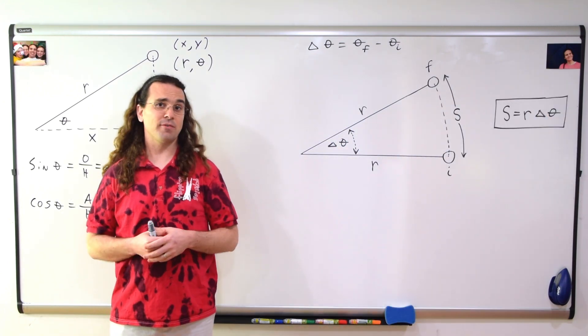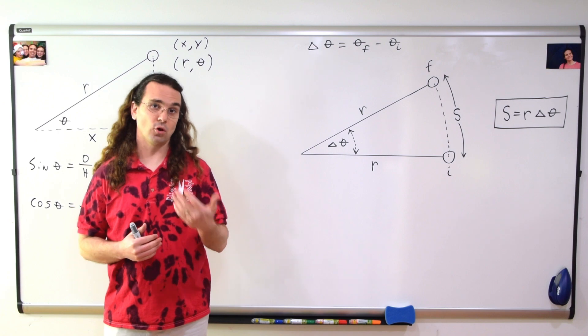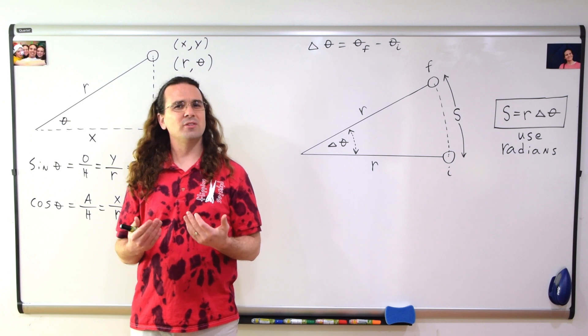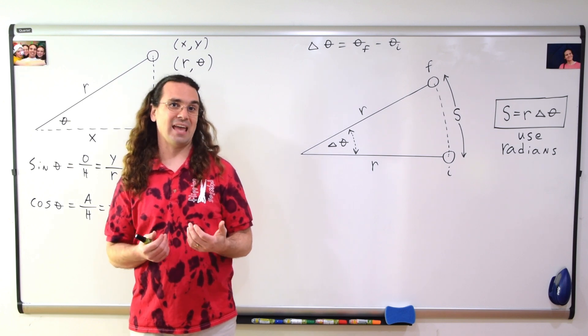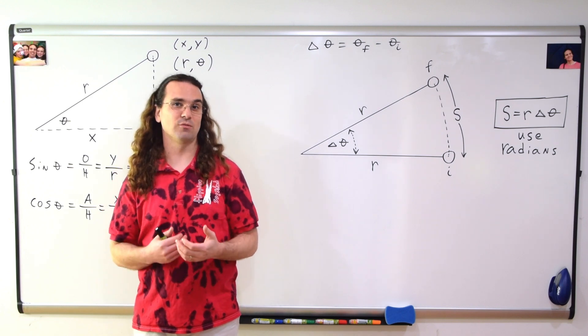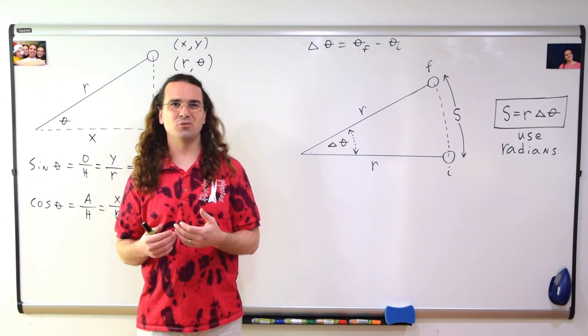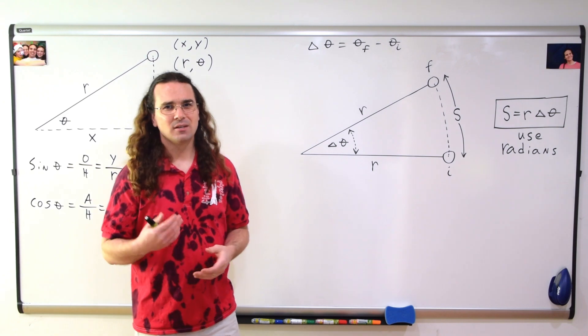And the equation for arc length, arc length or lowercase s equals the radius times the angular displacement. When you use the arc length equation, the units for the angular displacement must be in radians. In a future lesson, I'll show you why you must use radians in this equation.